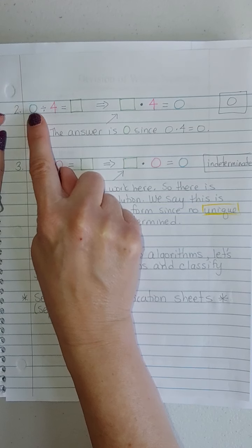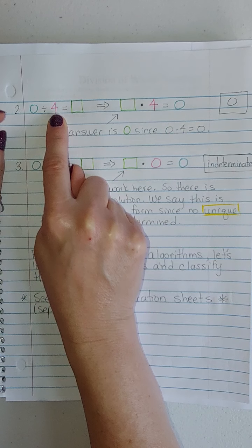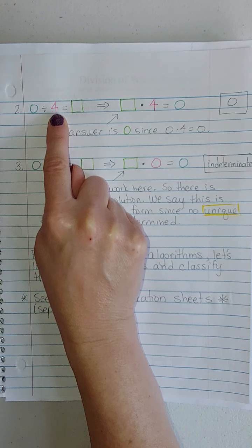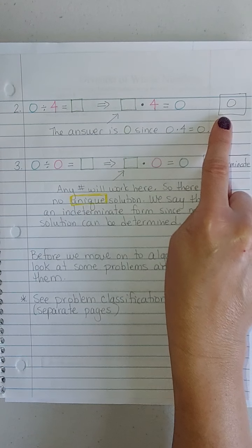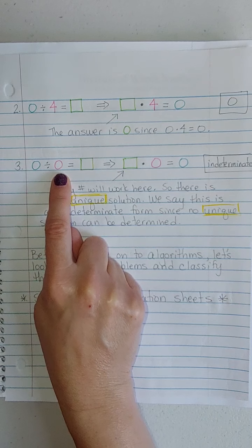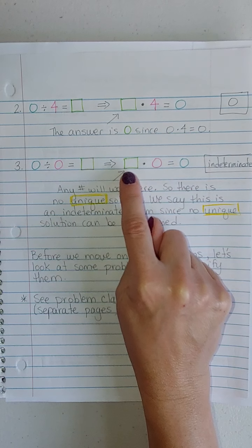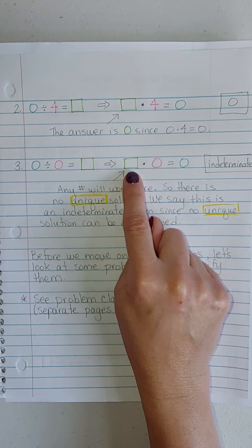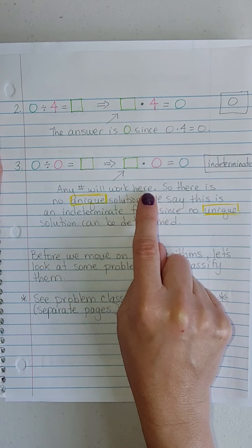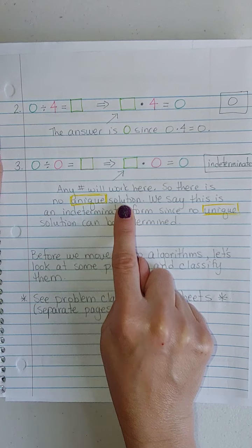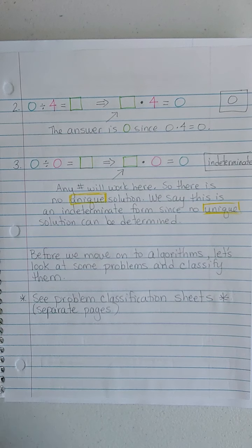What if both of these are 0? From the first one, if 0 was my divisor, the answer was undefined or no solution. If the 0 is first, if it's my dividend, then the answer was 0. So which one is it going to be if they're both 0? 0 divided by 0 equals what? That means what times 0 gives you 0. Here's the thing. For the first one, there was no answer. For the second one, it was just 0. This one, any number will work. So there's no unique solution. We say that there is an indeterminate, that this is indeterminate form because no unique solution can be determined.